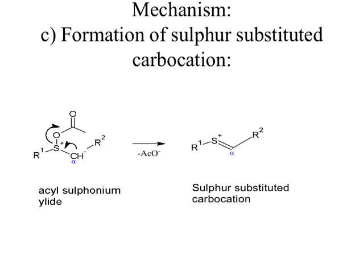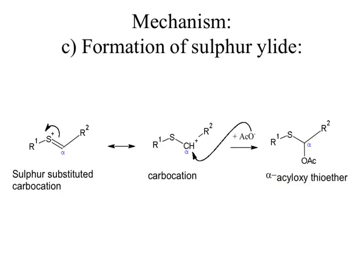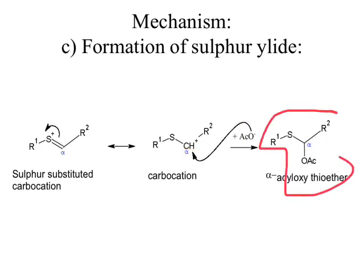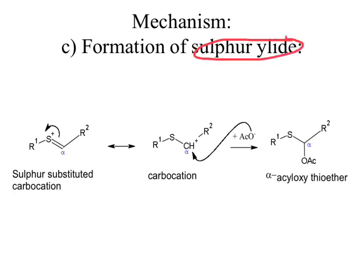There is a positive charge on the sulfur atom in the sulfur-substituted carbocation. The next step — and I should note here I made a mistake: the final product is not sulfur ylide, it is alpha-acyloxy thioether. We can write the resonating structure of the sulfur-substituted carbocation by shifting the positive charge from the sulfur atom to the alpha-carbon atom, giving a carbocation that is electrophilic in nature. The acetate ion from the previous step will act as a nucleophile and attack on this positively charged alpha-carbon atom, leading to formation of our product: alpha-acyloxy thioether.